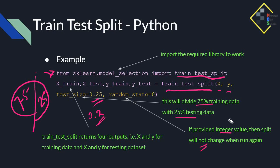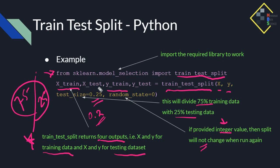The split will not change when run again, so a random state or general seed value is set in the notebook. The train_test_split returns four outputs: x_train and y_train for training data, and x_test and y_test for testing data.